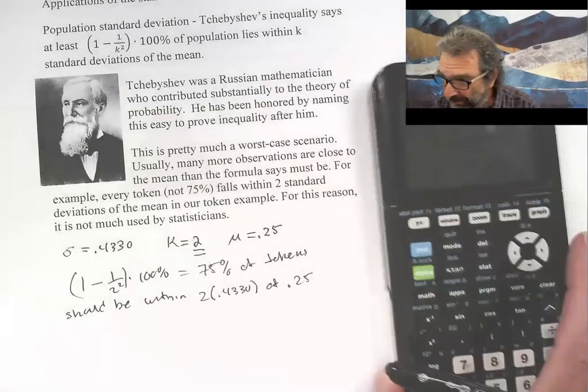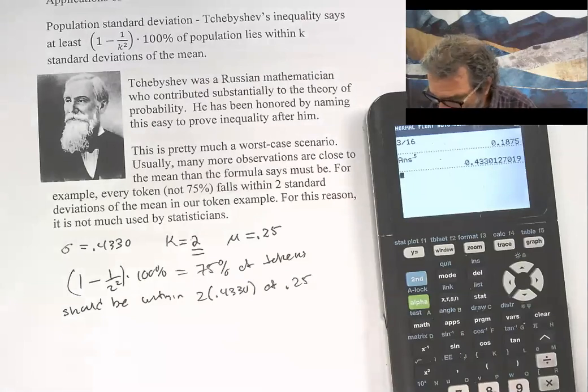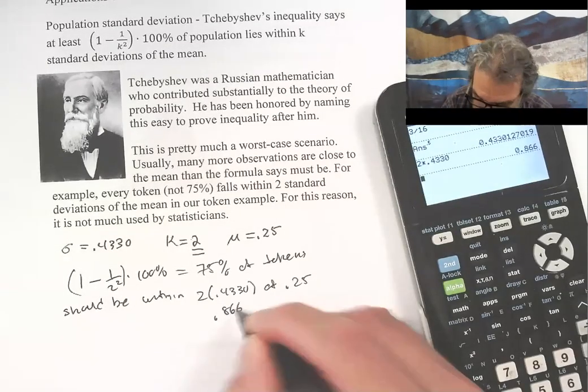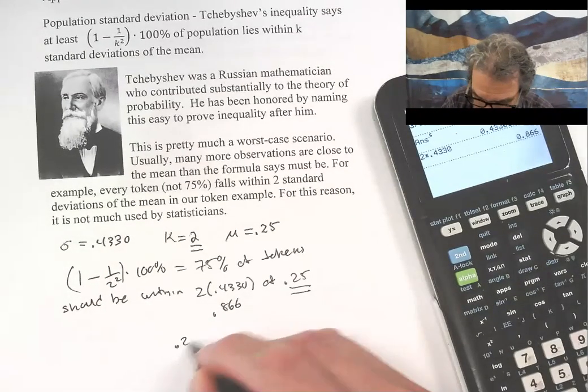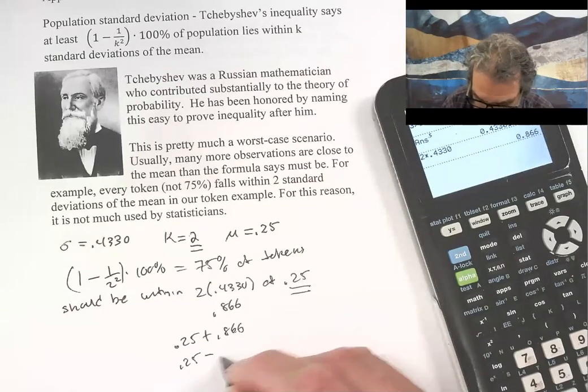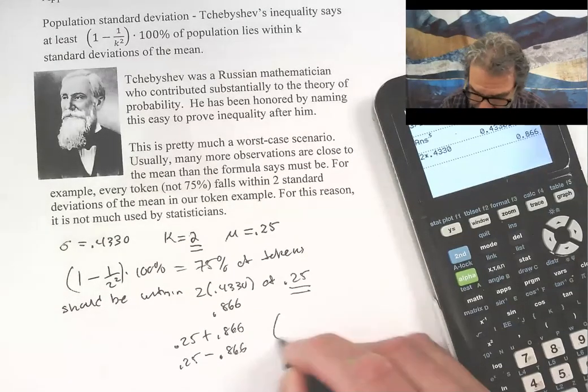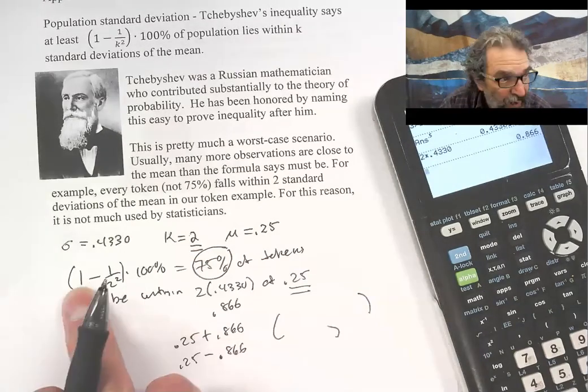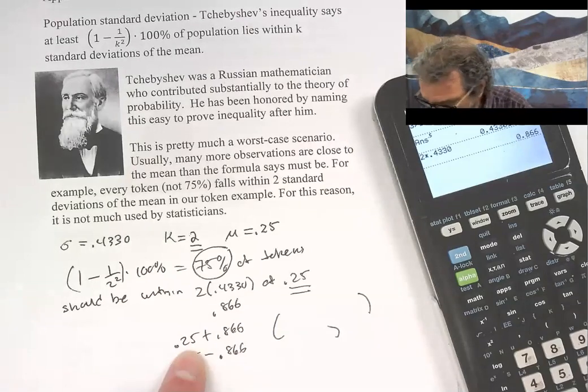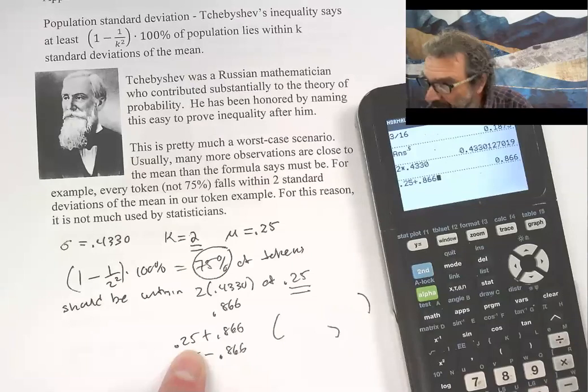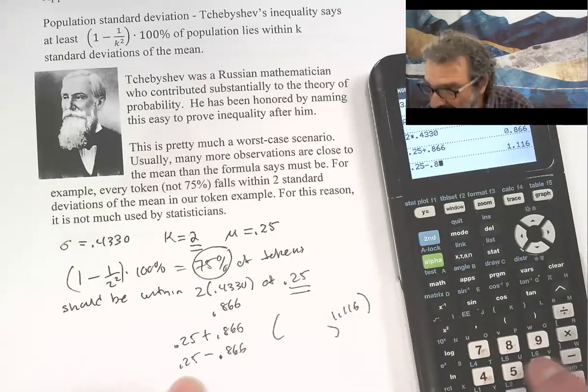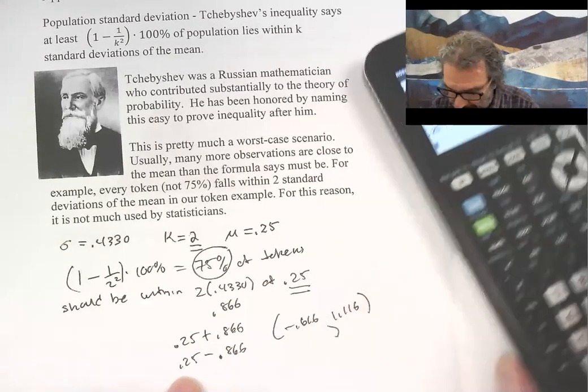So 2 times 0.4330 is 0.866. We're going to take 0.25 plus 0.866 and 0.25 minus 0.866, and that should give us an interval that Chebyshev's inequality would say at least 75 percent of the tokens should be in. That's 0.25 plus 0.866 equals 1.116 on the high side and 0.25 minus 0.866 equals negative 0.616.